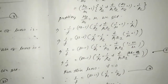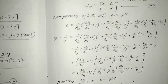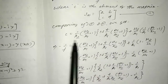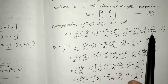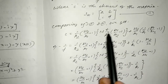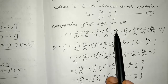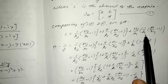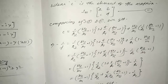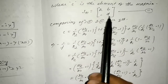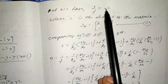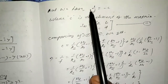So, comparing equations 1 and 2, we get C equals the third element: (1/R2)(1 + T/R1) + (1/R1)(1/R2 - 1) = minus 1/F.